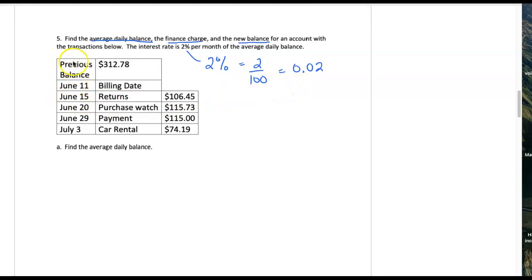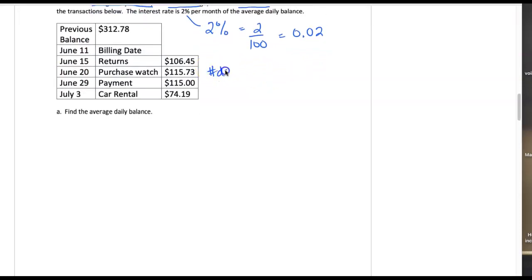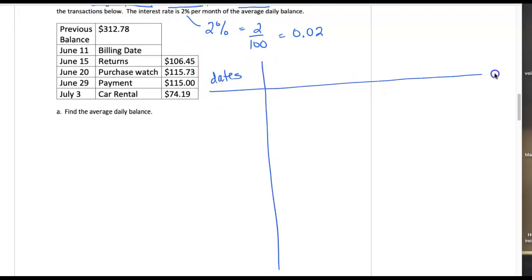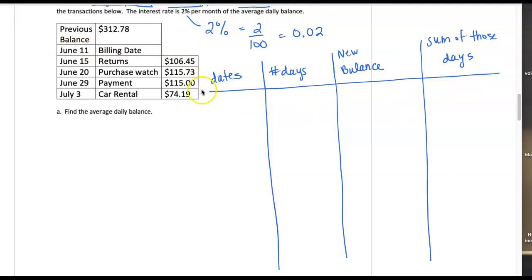Let's start with our information. The previous balance from the end of the previous month and the start of this new one was $312.78. We're going to start our billing date on June 11th, going through July 11th — so it's the bulk of June. I like to make a chart with the dates of the transactions, the number of days in that time period, the new balance at that time, and the sum of those dates. The first transaction: on June 11th we start out with $312.78 as our balance.